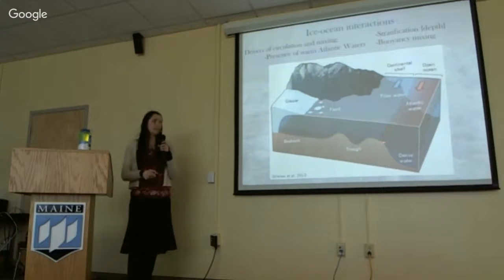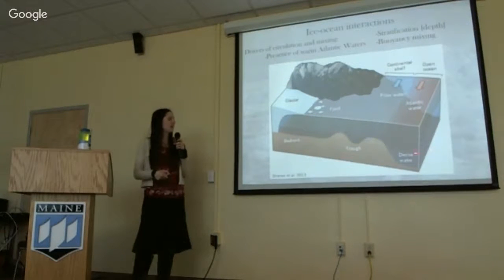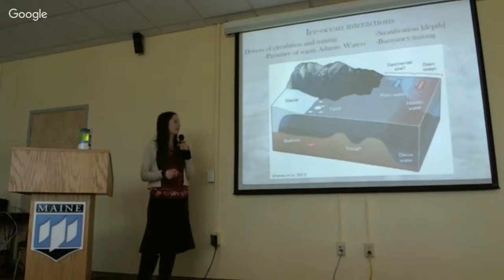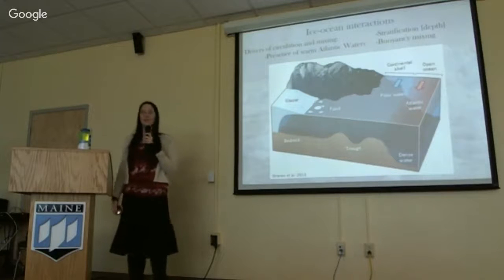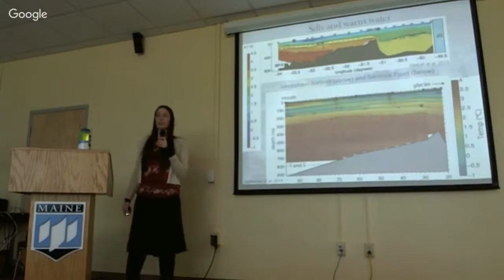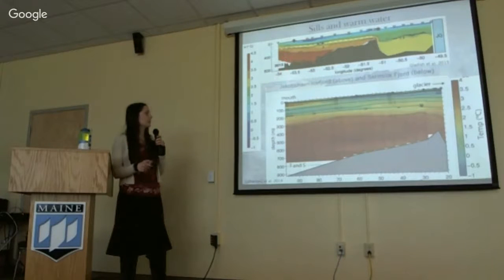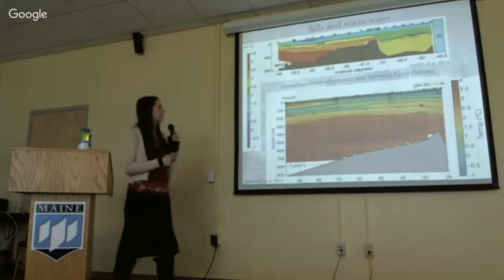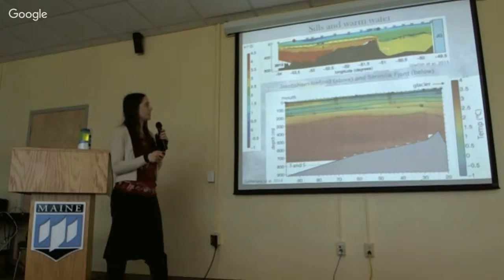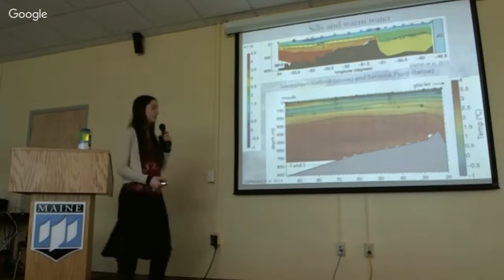What the bathymetry, or underwater topography, is doing in this region has important implications for whether or not this relatively warm water can make it to the margin of the glacier and therefore increase the ice melting rate. As an example, we have oceanographic measurements from two different fjords in Greenland. On top we have Jakobshaven Ice Fjord and on the bottom is Sermalik Ice Fjord. In both cases the open ocean is on your left and the glacier is on your right. At Jakobshaven we have a relatively high bathymetric sill and it prevents these really warm waters, shown here in red, from getting up to the margin of the glacier.